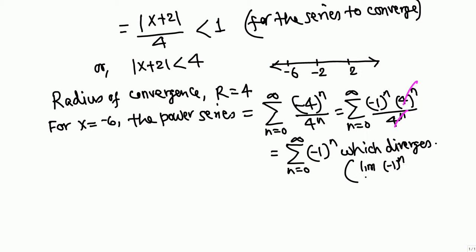The limit does not exist as n goes to infinity. From the test for divergence, if this limit is other than 0 the series diverges. So negative 6 is not in the interval of convergence — we use a parenthesis, not a bracket.